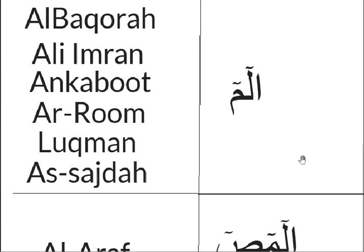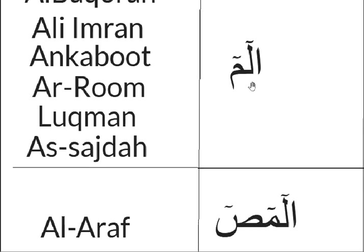These are muqatta'at letters found at the beginning of several surahs in the Quran. The first combination, Alif, Lam, Mim, is found in these 6 surahs. Lam is 6 harakat, then the guna — Mim — 2 harakat, then Mim again, 6 harakat.